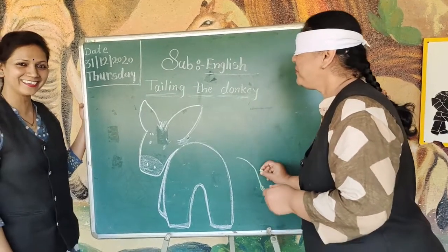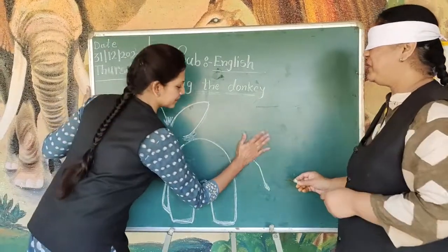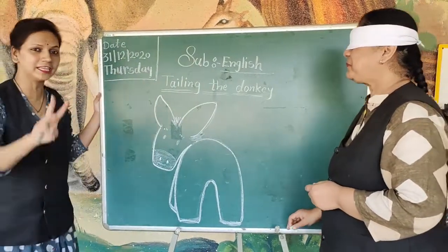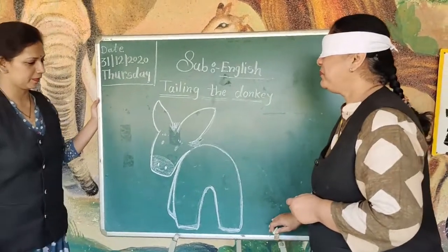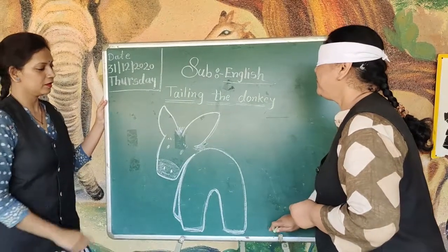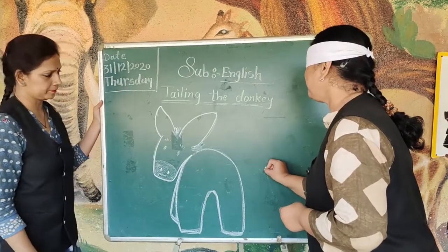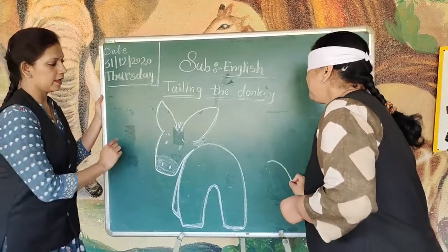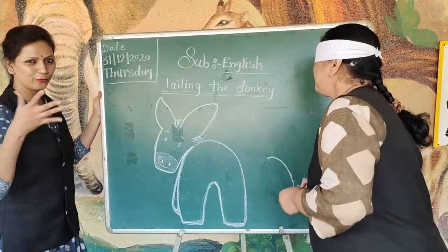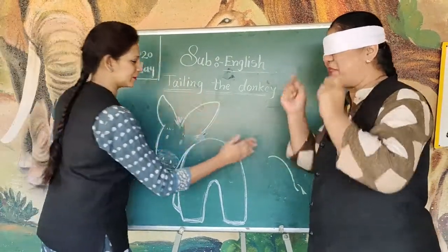Is it correct? No? Vodke ma'am, one more time. I am giving her one chance — three chances. Let her try. You can draw any animal's picture. Is it correct? No. No. One more chance.